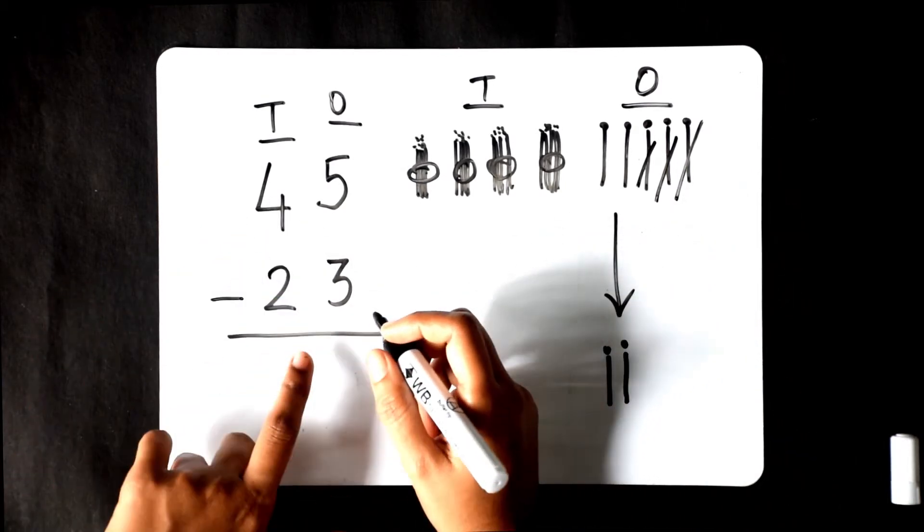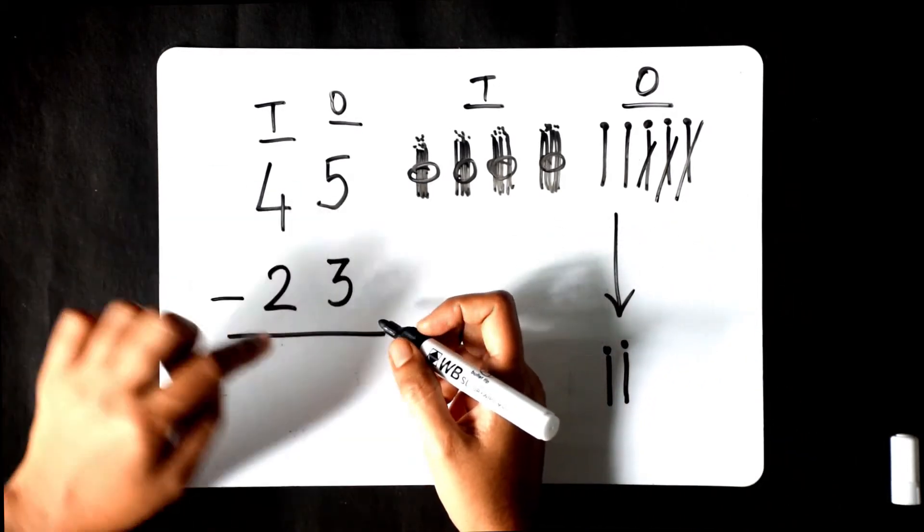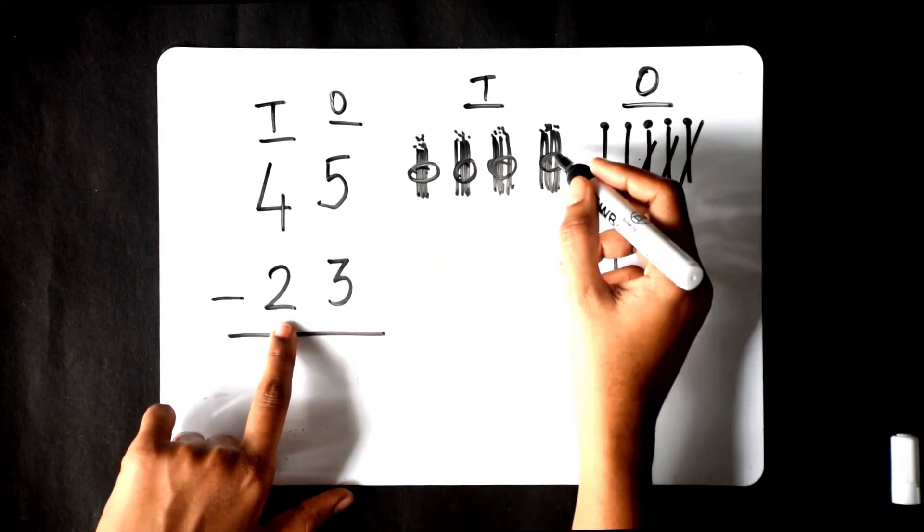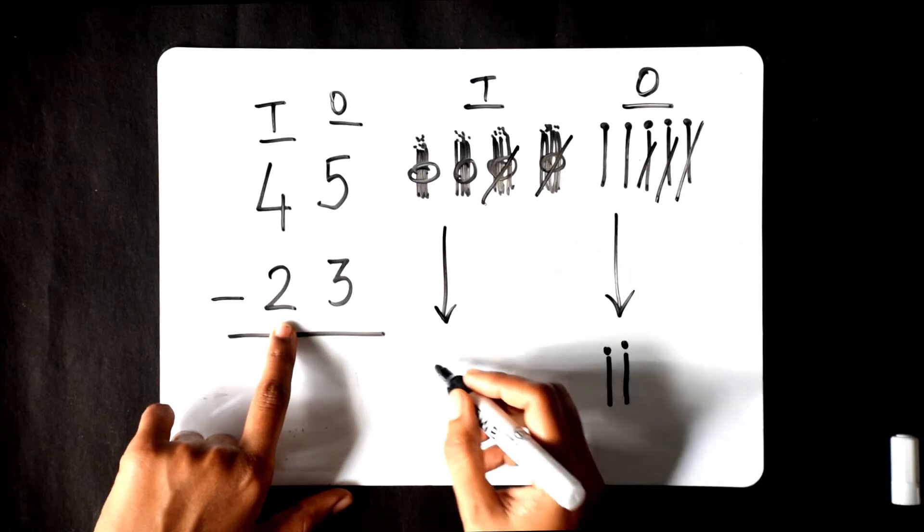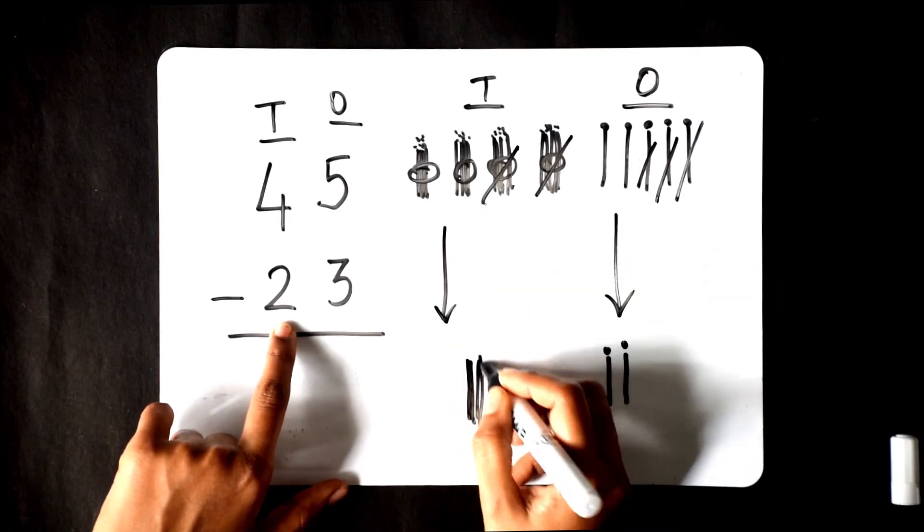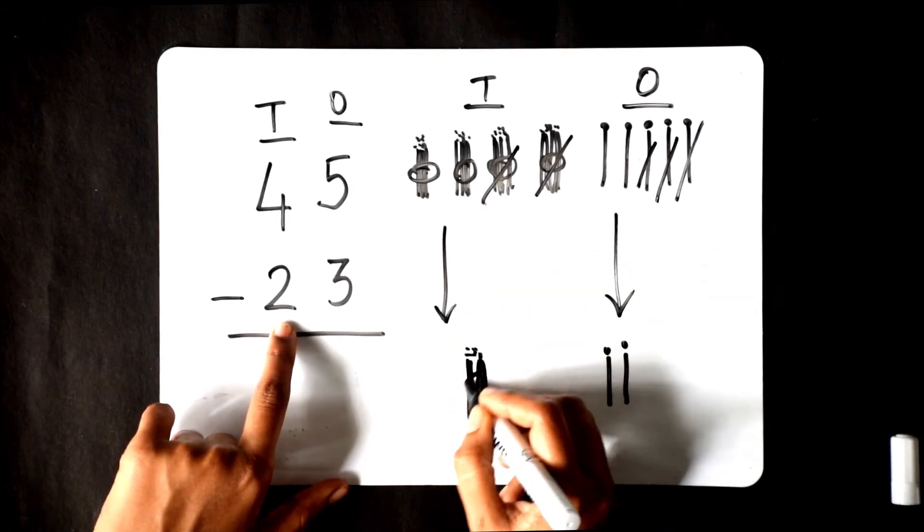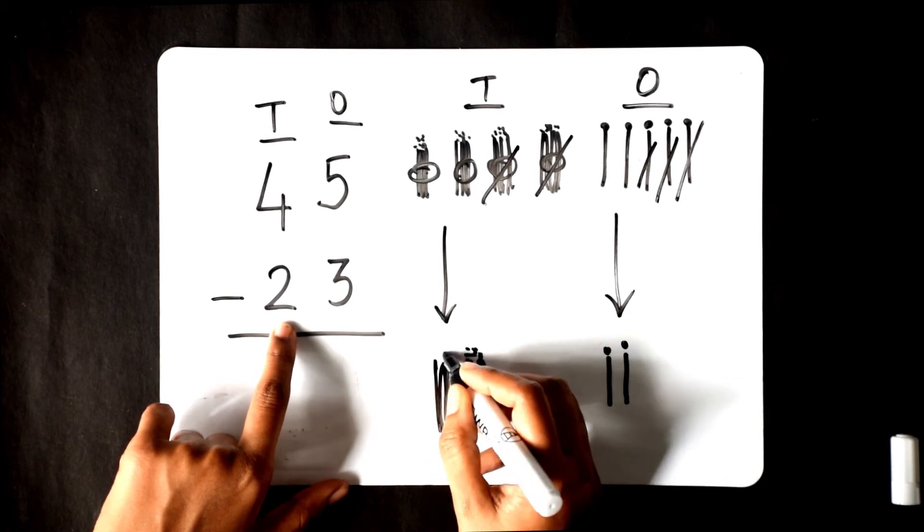Similarly, in the tens, we have 4 tens and we are going to take away 2 tens. Let's strike away 1, 2, 2 tens and write the remaining tens here: 1, 2.